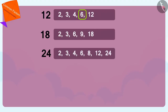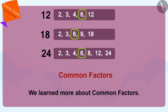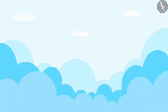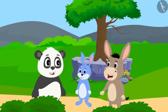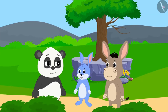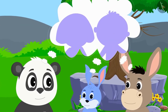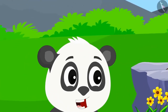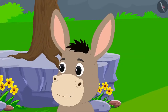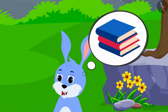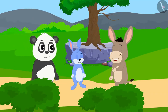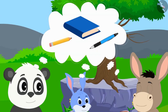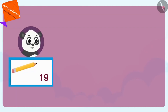Hello kids, in the previous video, we learned more about common factors. In this video, we will see some interesting concepts related to this. Golu, Bola and Banni together have decided to donate some items to the needy children of Champapur. Golu will bring pencils, Bola will bring pens, and Bunny will bring notebooks. Then all three of them will divide those things equally among the number of children so that every child gets every item. Golu has brought 19 pencils, Bola has brought 48 pens and Bunny has brought 54 notebooks.